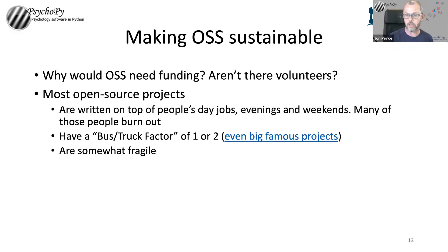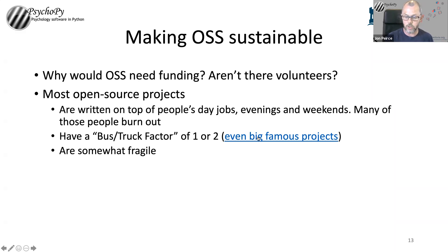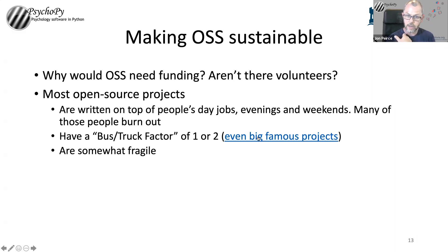Most open source projects have a bus or truck factor of one or two. That's how many people have to get hit by a bus or truck — or win the lottery and stop wanting to work on this — before the project dies. Even big famous projects: there's a study from 2015 that showed pandas had a bus factor of two in 2015. So if two people got distracted or went elsewhere, pandas would stop being developed. They're fragile. You might say that's true of commercial software as well, and if a commercial package dies you're in more trouble because you don't have the code to continue developing it. But open source projects are kind of fragile because of this issue.